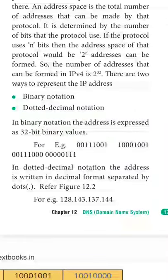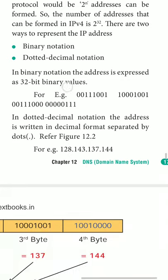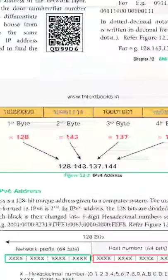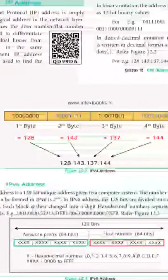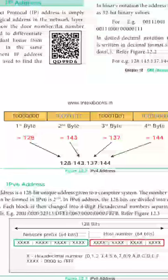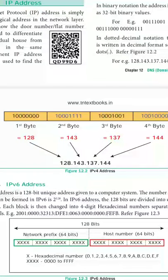There are two types of notation for IPv4: binary notation and dotted decimal notation. Binary notation uses zeros and ones. Dotted decimal notation looks like 128.143.137.141. The first byte 128 is converted to its binary value, 143 to its binary value, 137 to its binary value, and all binary values are combined to form the full IP address.